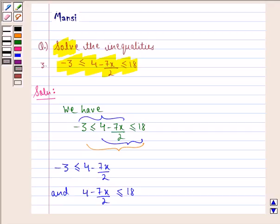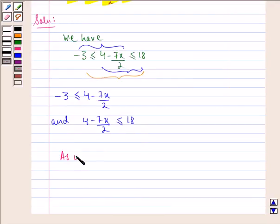Now we solve them simultaneously. As we have minus 3 is less than equal to 4 minus 7x by 2 is less than equal to 18, or minus 6 is less than equal to 8 minus 7x is less than equal to 36.